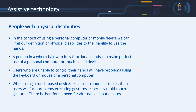Assistive technology for people with physical disabilities. In the context of using a personal computer or mobile device, we can limit our definition of physical disabilities to the inability to use the hands. A person in a wheelchair with fully functional hands can make perfect use of a personal computer or touch-based device. Users who are unable to control their hands will have problems using the keyboard or mouse. When using a touch-based device like a smartphone or tablet, these users will face problems executing gestures, especially multi-touch gestures. There is therefore a need for alternative input devices.